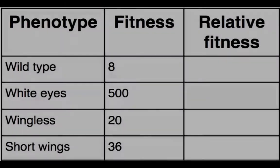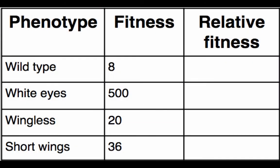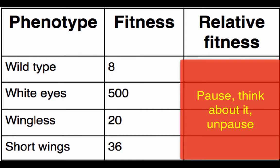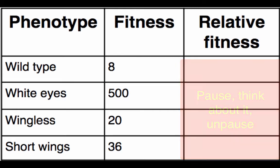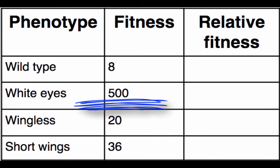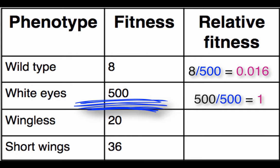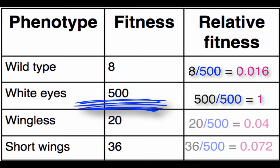Given the absolute fitness levels from our fruit flies, you should be able to solve for the relative fitness. Pause the video, solve the problem, then unpause when you're ready for the answer. To solve, find the most fit organism — that's white eyes at 500 — then divide all fitness levels by 500. Wild type: 0.016. White eyes: 1. Wingless: 0.04. Short wings: 0.072 relative fitness.